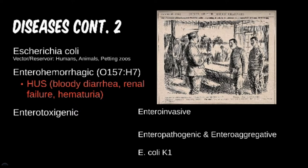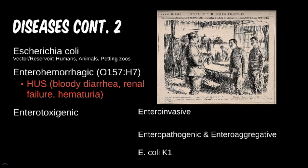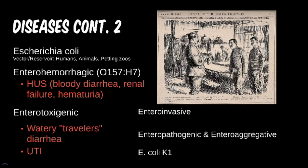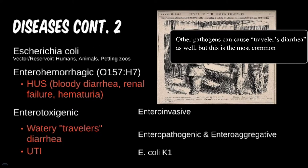The second most prominent for testing purposes is usually enterotoxigenic E. coli (ETEC). This version doesn't have the same virulence factors as its hemorrhagic cousin and causes a milder, watery gastritis. It is often seen in patients who travel to Mexico and other endemic regions and is also known as traveler's diarrhea.